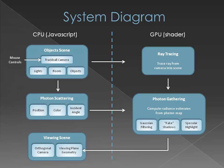Here is a diagram of my rendering pipeline. On the CPU side, I have an object scene and a camera, which is controlled by the user. The scene is then used to compute the photon map, and from that we get a list of photon position, color, and incident angles. The scene information and photon information are both sent down to the shader to perform rendering by ray tracing and computing radiance estimates.